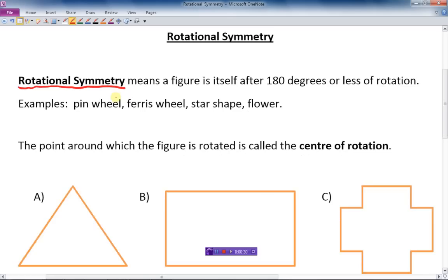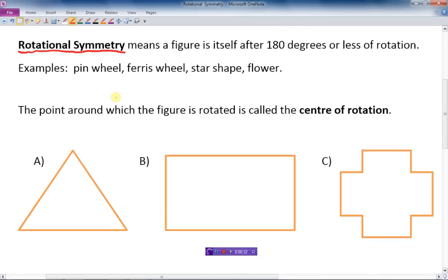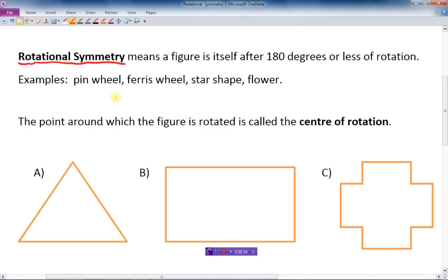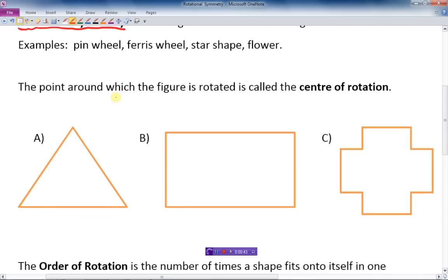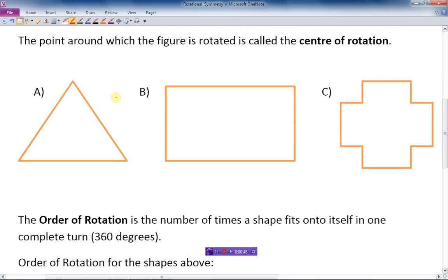So let's look at three shapes here. One other vocabulary word we need to look at before we continue on is the expression center of rotation. The point around which the figures are rotated is called the center of rotation. So I look at these three figures here and try to pick out the center of rotation. It would be like the middle.